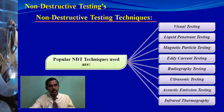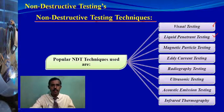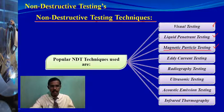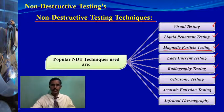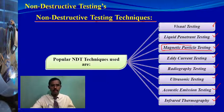The eight popular NDT methods are: visual inspection, liquid penetrant testing, magnetic particle testing — which is our topic of interest for the upcoming classes — eddy current testing, radiography, ultrasonic testing, acoustic emission, and infrared thermography.